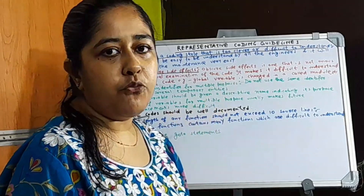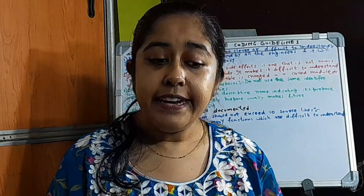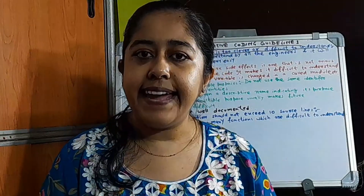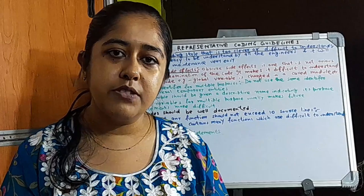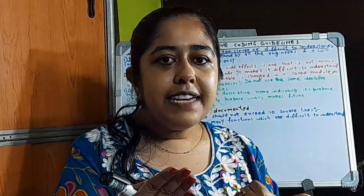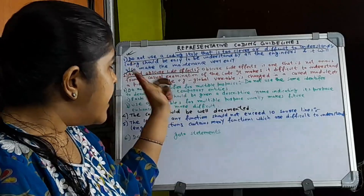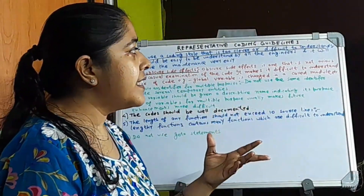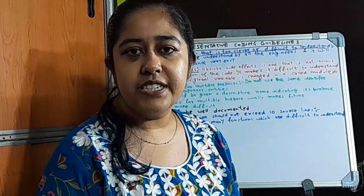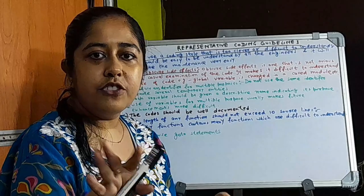These obscure side effects make it difficult to understand a piece of code. When such an error comes, your output will change and it becomes difficult to find where the error is. For example, a global variable that is changed inside a called module creates this problem. You have to ensure that this kind of obscure side effect is not created in your code.